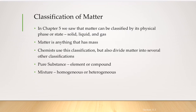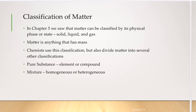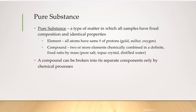Matter can be divided into two sections: pure substance and mixture. A pure substance can be either an element or a compound. A mixture can be homogeneous or heterogeneous. A pure substance is a type of matter in which all samples have fixed composition and identical properties.